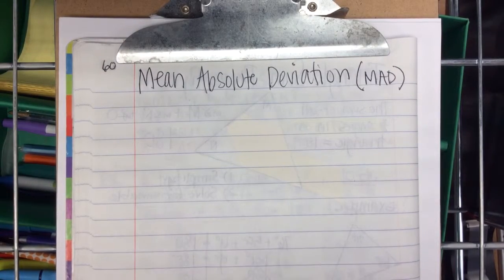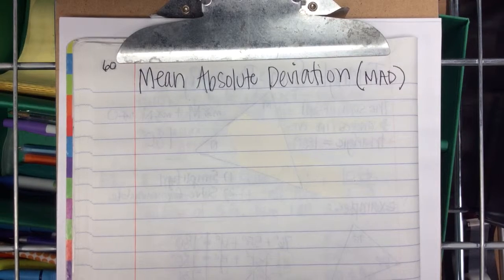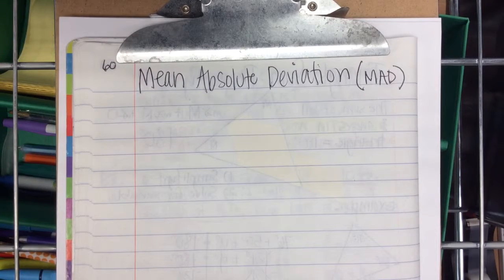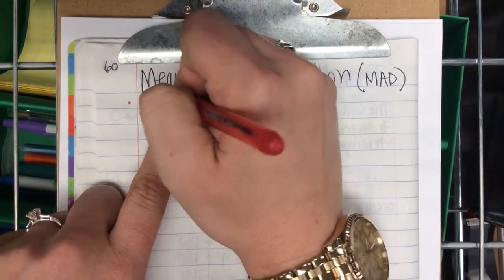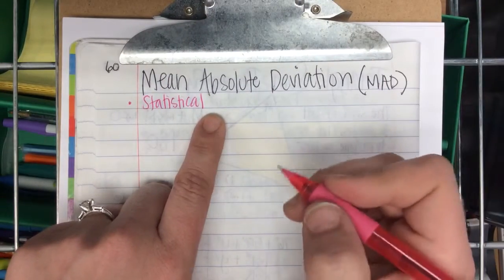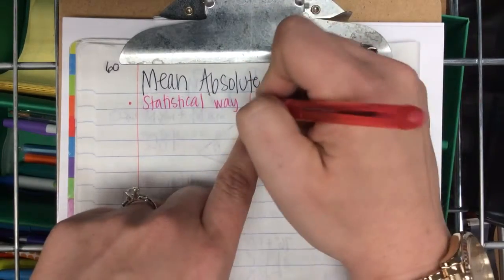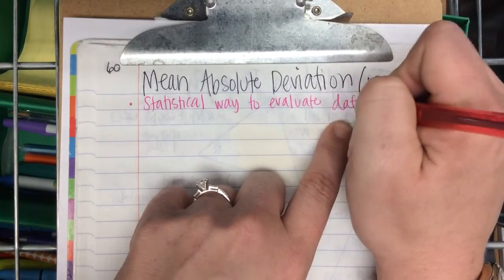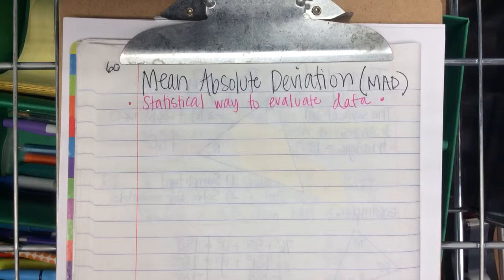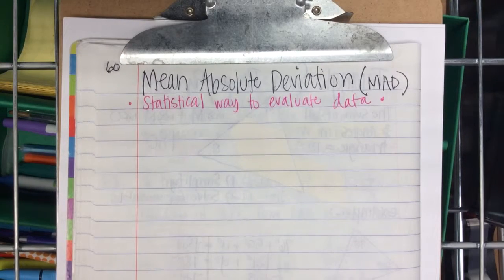Okay, mean absolute deviation. We use it for statistics. It's a statistical way to evaluate data. The mean absolute deviation is an extra statistical way to evaluate data.